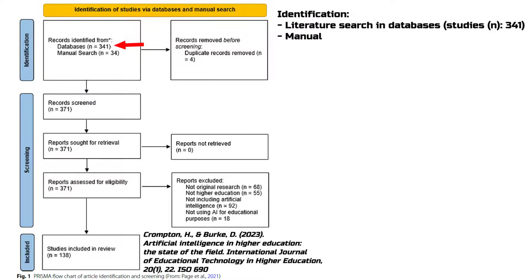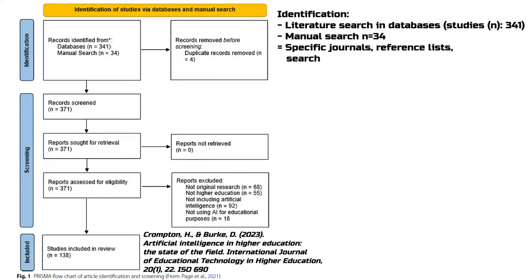Additionally, they conducted a manual search, finding 34 more studies. A manual search means that the researchers independently searched specific journals, reference lists, search engines, and websites in addition to the automated database search to ensure that no relevant studies were overlooked. Four duplicate studies were removed in this phase.